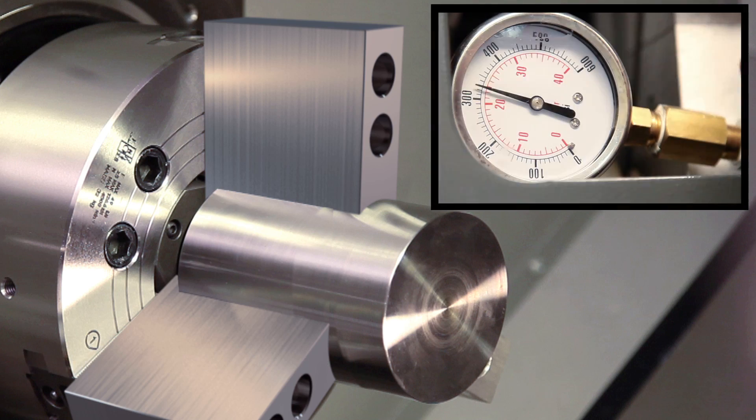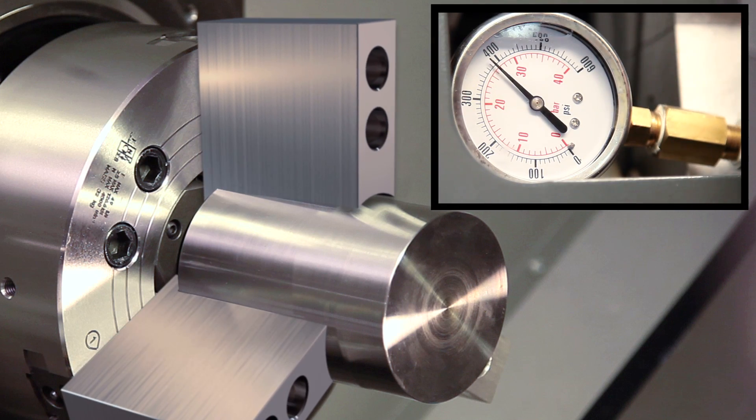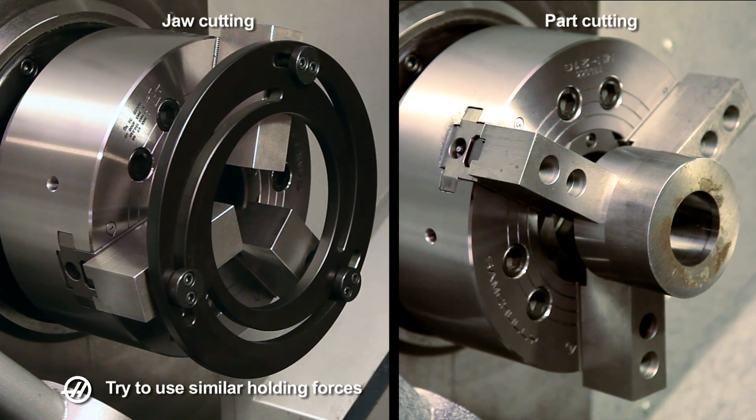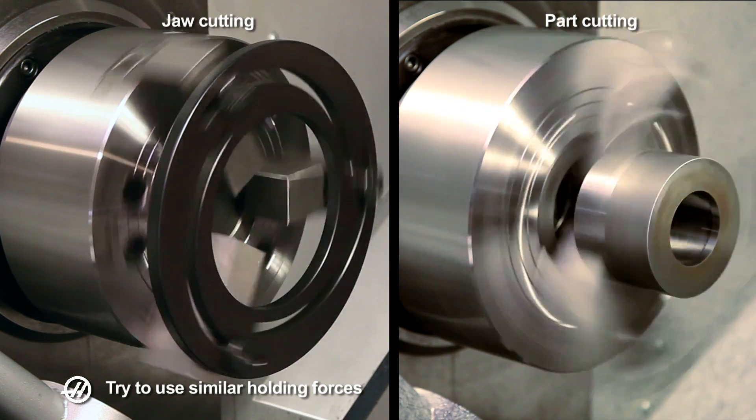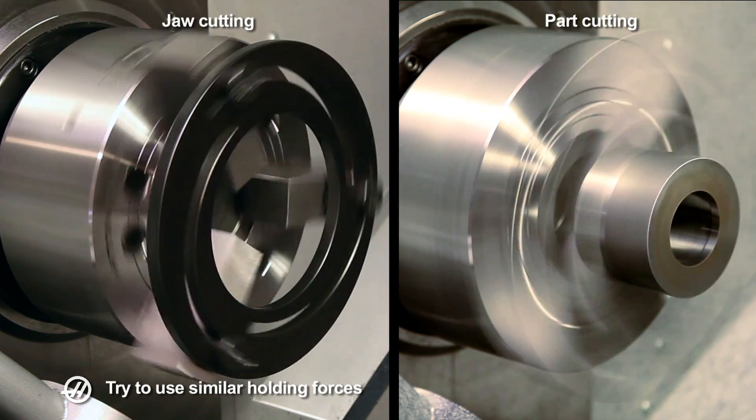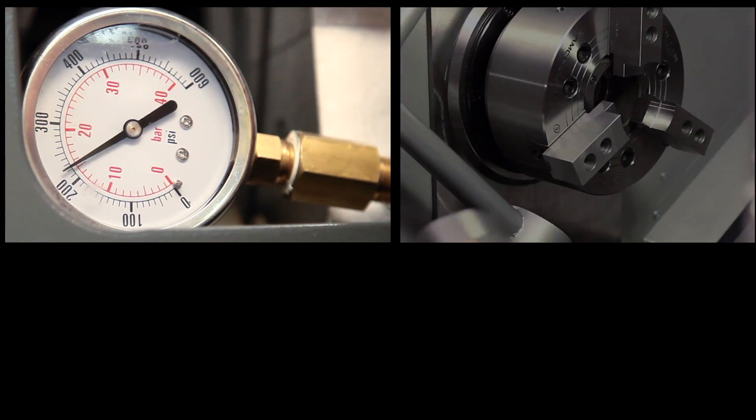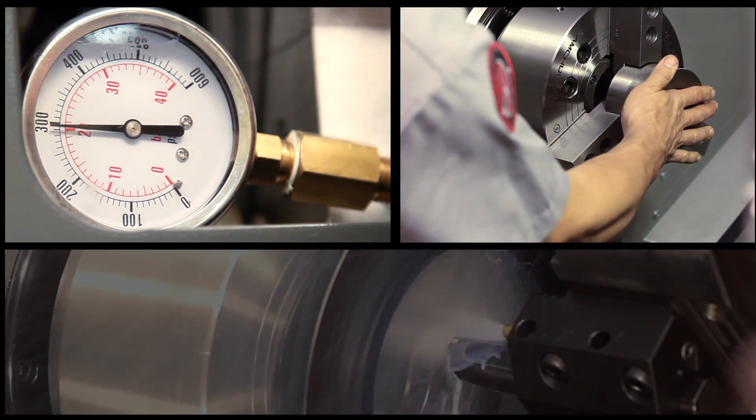When clamping force increases, so does the deformation of the jaws. For this reason, when cutting soft jaws, it is important to try and use the same holding pressure that will be used when machining the production parts. When the pressure needed to hold the part is much higher than the pressure that was used to cut the jaws, the jaws will deflect away from the part.